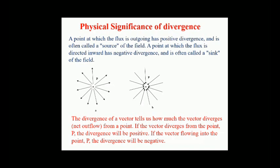Any closed surface in the gas will enclose gas which is expanding, so there will be an outward flux of gas through the surface, and the velocity field will have positive divergence everywhere. Similarly, if the gas is cooled, it will contract. The external pressure of the fluid will cause a net flow of gas inward through any closed surface; therefore the velocity field has negative divergence everywhere.